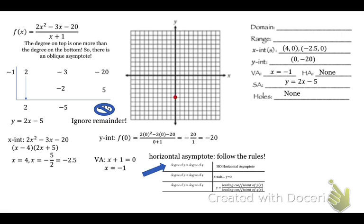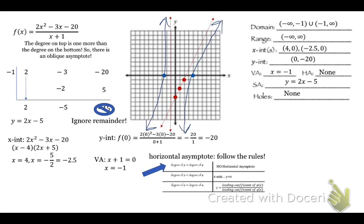To graph this, let's graph the slant asymptote first. Remember y equals mx plus b — the negative 5 is the y-intercept, so go down to negative 5. The slope is 2, so go up 2 over 1. That's the slant asymptote. The vertical asymptote is x equals negative 1. The y-intercept at (0, negative 20) is off the graph. The x-intercepts are at negative 2.5 and 4. Domain: negative infinity to negative 1, union negative 1 to infinity. Range: negative infinity to positive infinity.